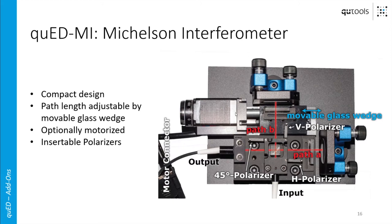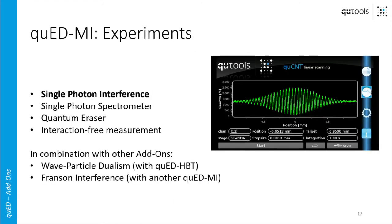Depending on how thick the glass is, the optical path length of path B is changed either by a motor or in a manual version. An added feature is that you can insert polarizers into path A and path B, and also put one in the output port behind the beam splitter — which means you can first destroy the interference by putting which-way information into the paths, and then regain the interference by erasing that information with a 45-degree polarizer in the output even behind the beam splitter. This is called a quantum eraser experiment. You can also use the Michelson interferometer as a single photon spectrometer to determine wavelength and coherence length, and you can do interaction-free measurement — sometimes also called the Elitzur-Vaidman bomb test.